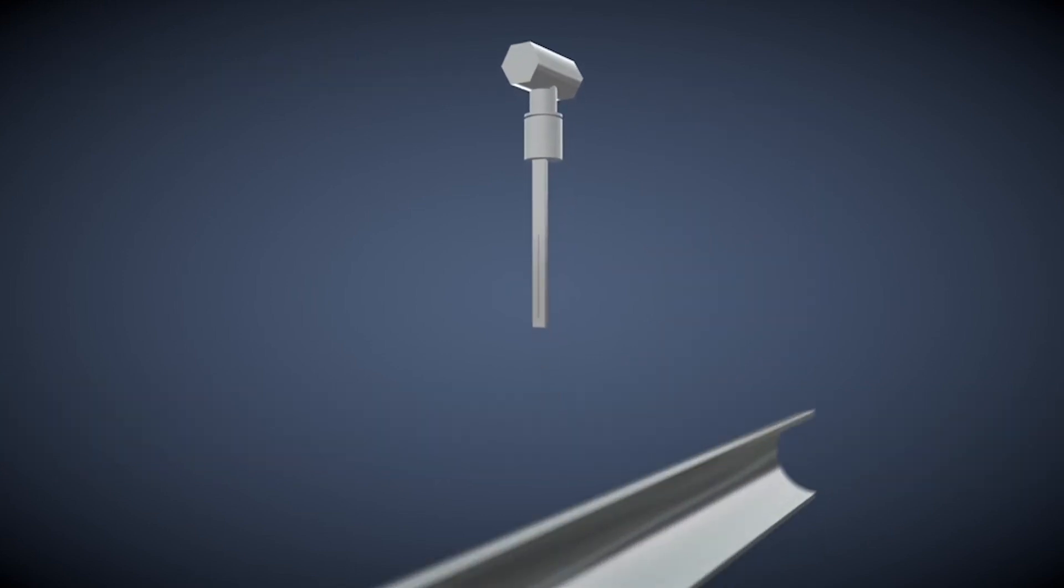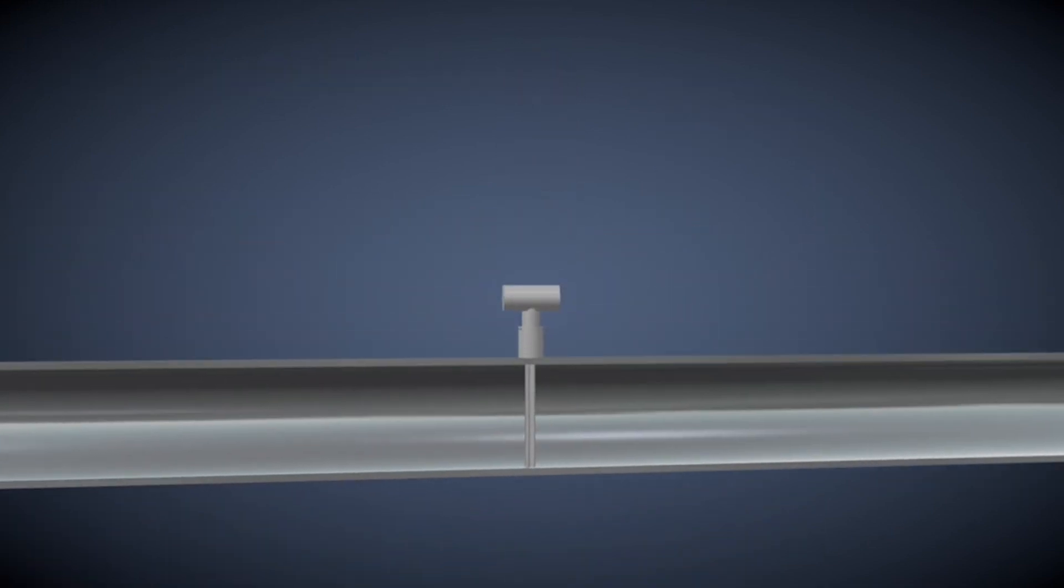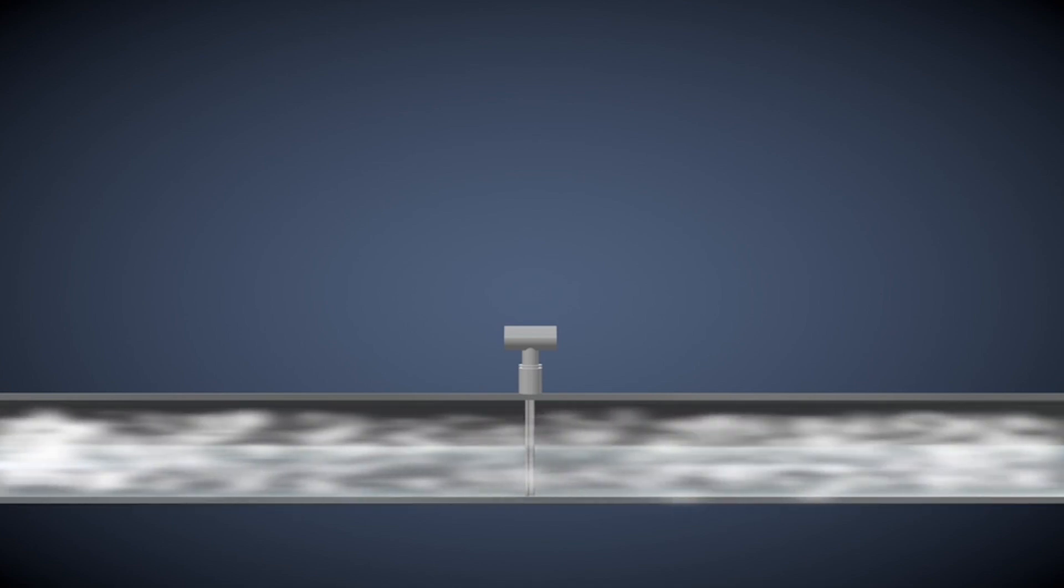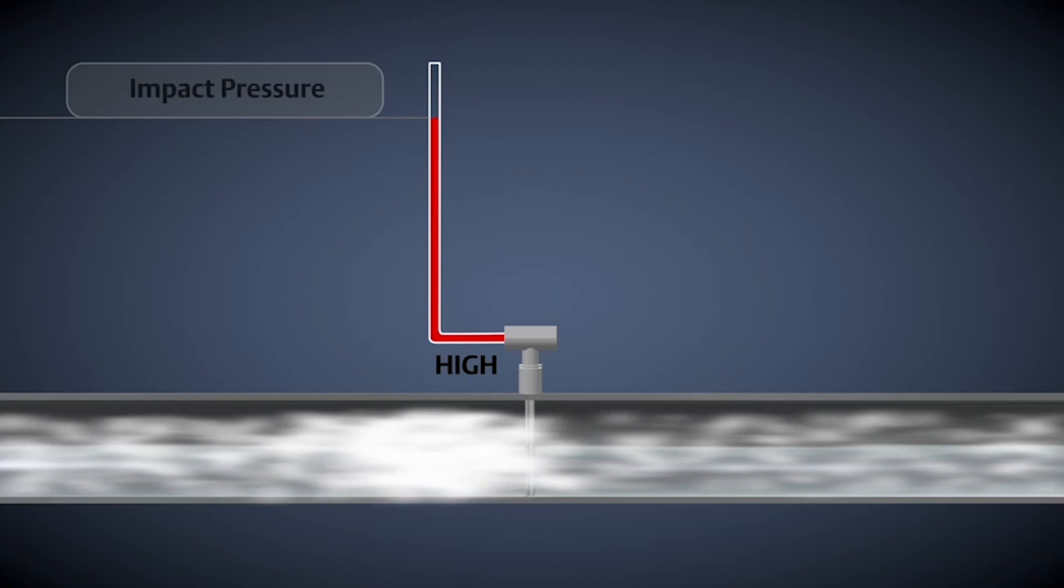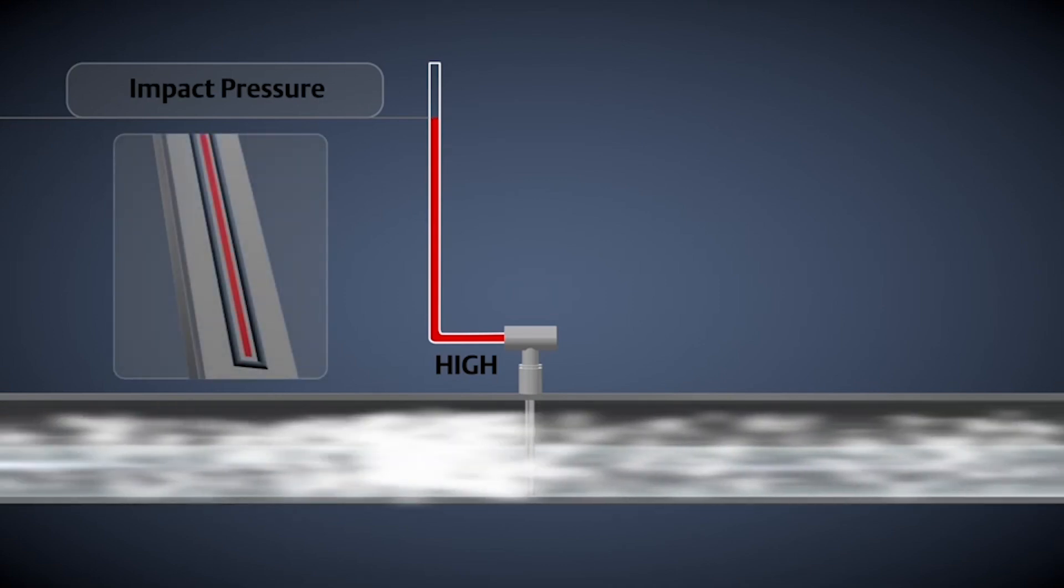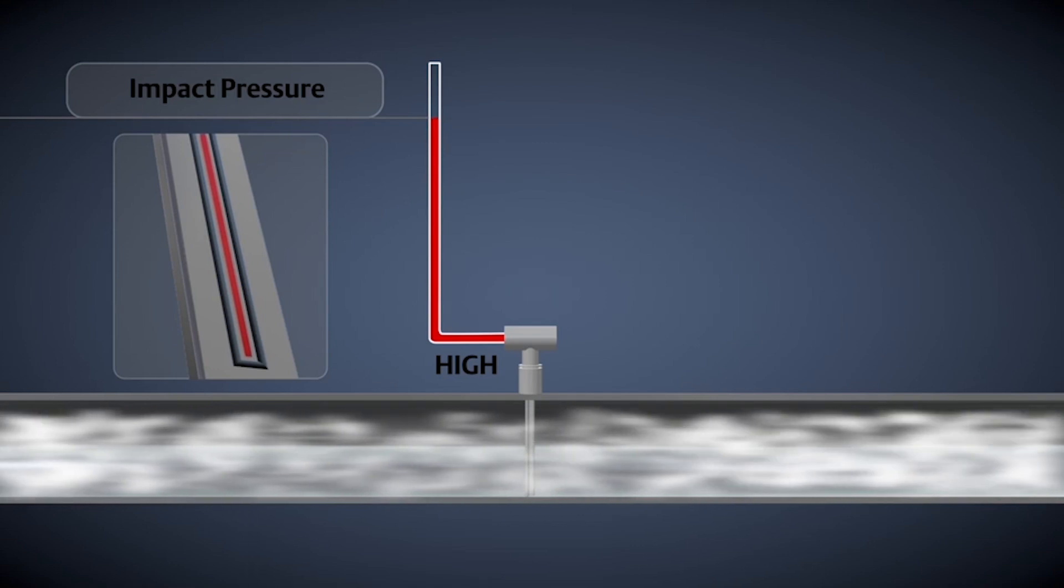The basic principle of operation for the Anubar flow meter is simple. As flow is moving down the pipe, it impacts the front side of the bar. This creates an impact pressure that is read by the slots in the Anubar sensor, capturing more of the flow profile for a more comprehensive and accurate measurement.